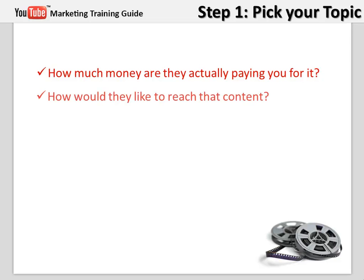How would they like to reach that content? Video? Audio? Writing? Blogging? This is important to know. Think about what limitations there might be on their abilities to read, hear, watch, or use the computer. If they have no limitations, just ask them what they prefer. Do they like to read? Do they like to watch videos? Do they like to listen to audio? Do they like to use YouTube?